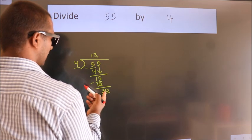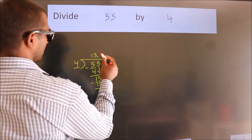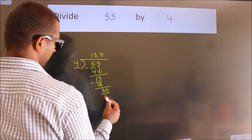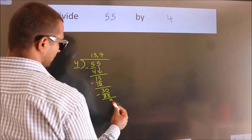So 30. A number close to 30 in 4 table is 4 7s 28. Now we subtract. We get 2.